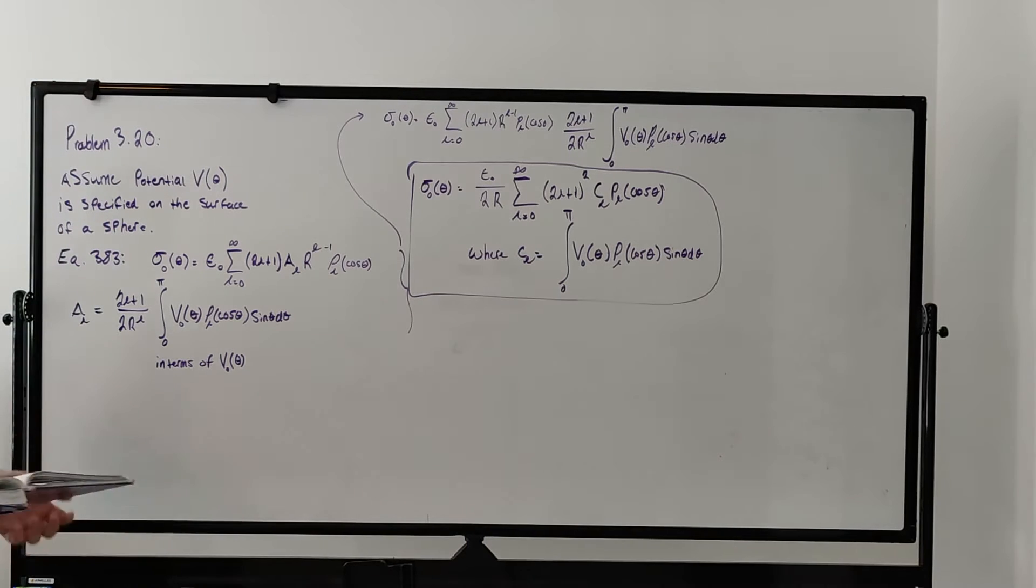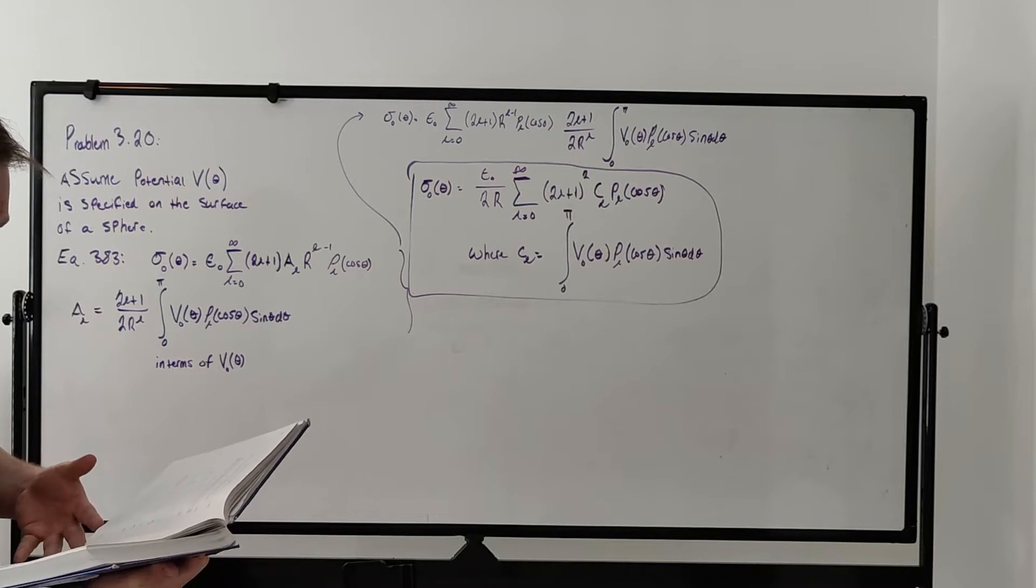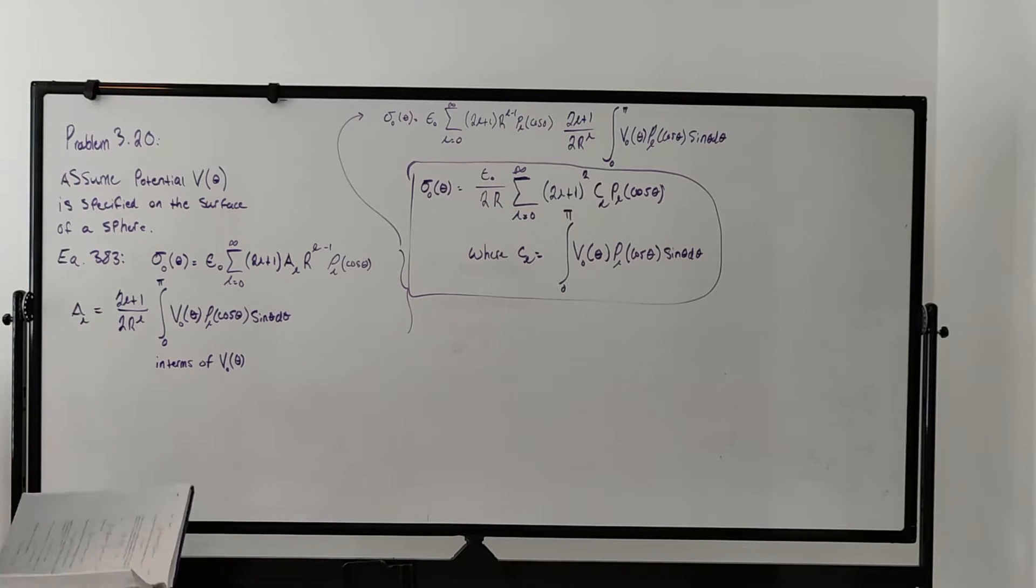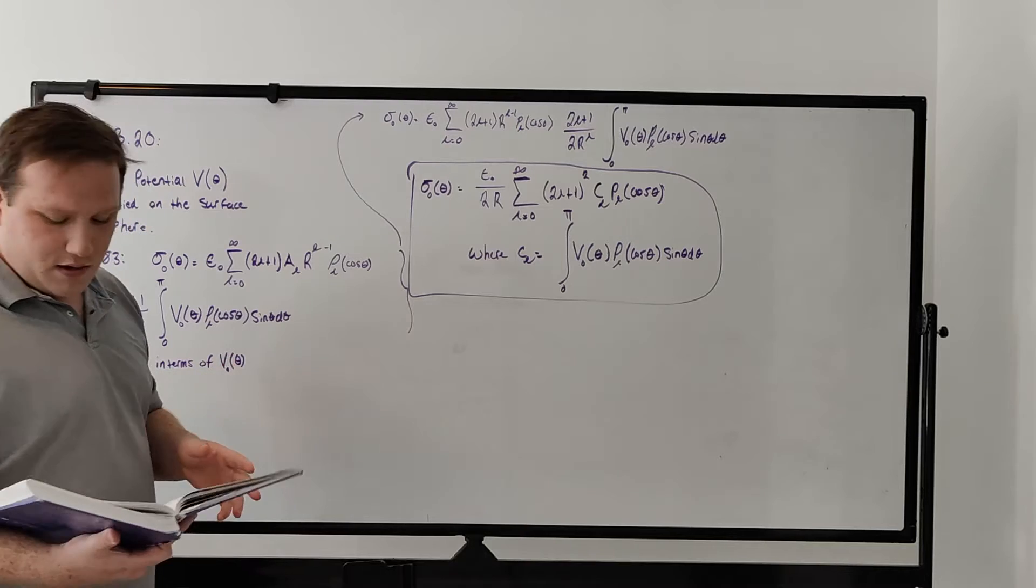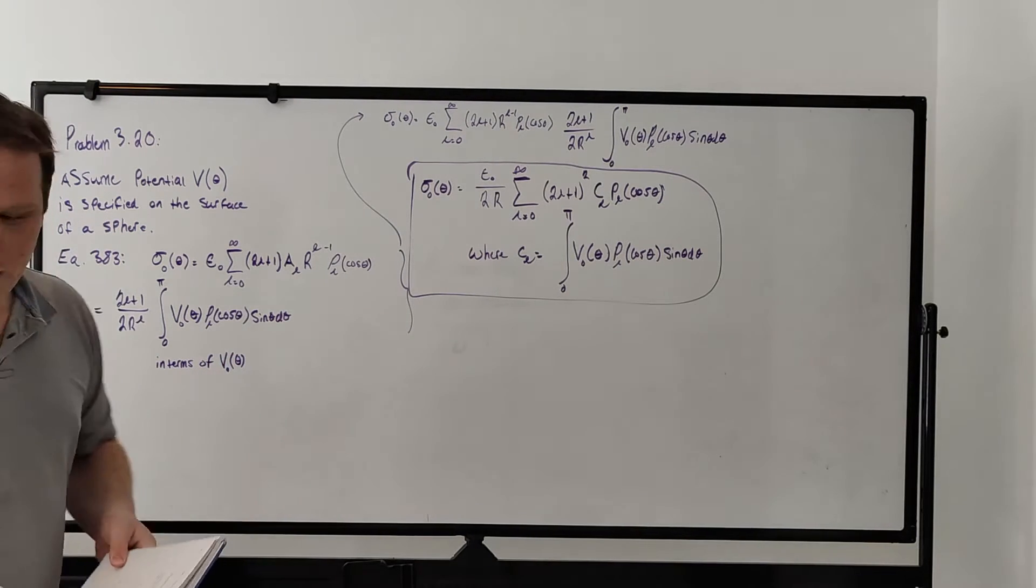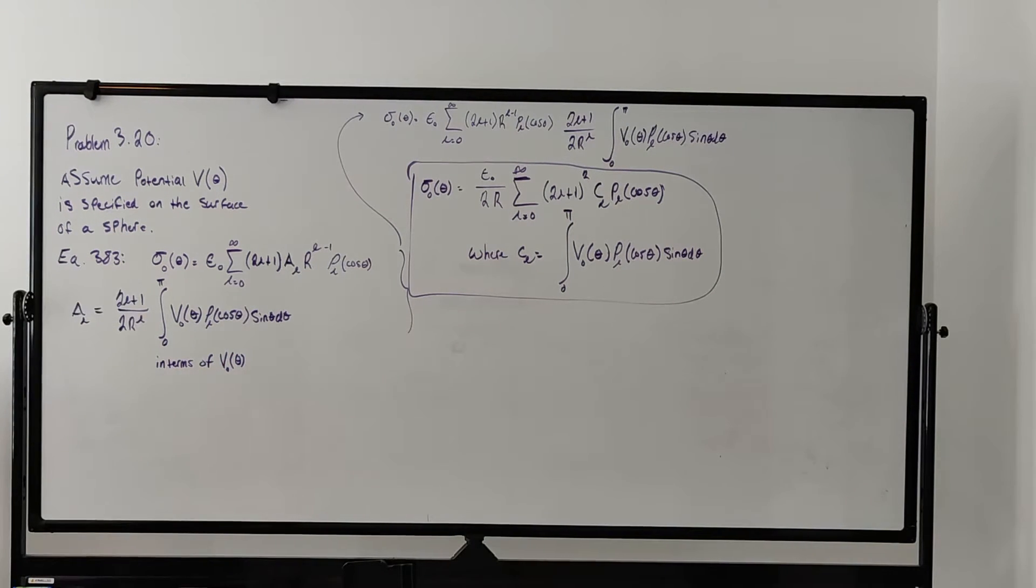If you have the textbook, just look in the book to actually see what it's saying. Essentially, we know our potential specified on the surface of the sphere, and we want to find the charge density as a function of the potential.